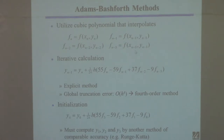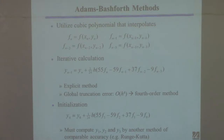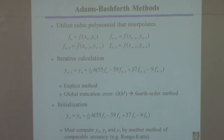One problem you're going to have is getting this iteration started. To generate y_1 you need y_0 — that's fine, that's the initial condition. But you also need y_{-1}, y_{-2}, and y_{-3}, and you don't have those. So usually to get this iterative calculation started, you have to use a single-step method to generate the first three steps, and then switch to this method. For example, you could use Runge-Kutta to get y_1, y_2, and y_3, then launch off with Adams-Bashforth.